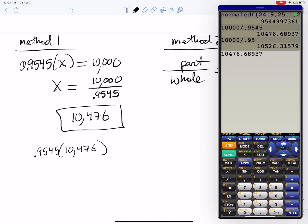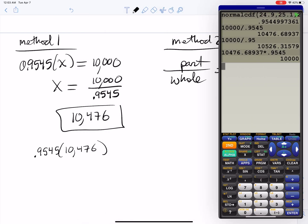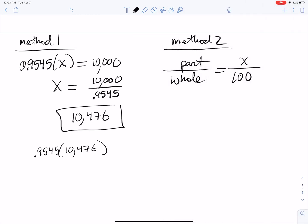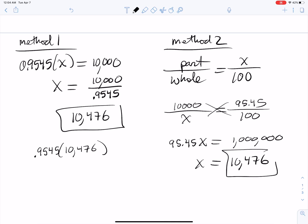Method 2: you could say that the part is 10,000 and you don't know the whole. The percentage is 95.45 divided by 100. Cross multiply: 95.45X equals a million because 100 times 10,000 is a million. Then divide and you'll get X equals 10,476. You get the same answer.